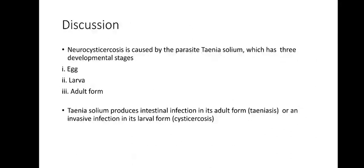Discussion: Neurocysticercosis is caused by the parasite Taenia solium, which has three developmental stages: egg form, larval form, and adult form. Taenia solium produces intestinal infection in its adult form, i.e., teniasis, or an invasive infection in its larval form, i.e., cysticercosis.